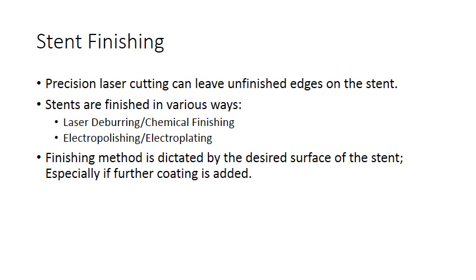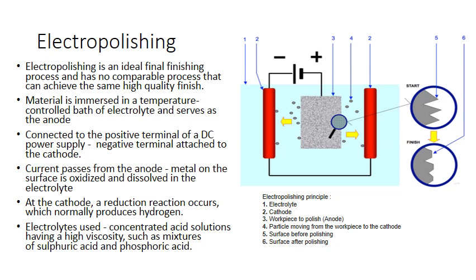Even with precision laser cutting, unfinished edges can remain and these need to be deburred or finished in different ways. Laser deburring can remove rough edges using a laser, and there can also be chemical finishing, electropolishing, or electroplating. The finishing method is dictated by the desired surface of the stent, especially if a further coating such as a polymer for drug release is added. Rumbling and tumbling are a first step; passivation and electropolishing then give the ideal surface finish.